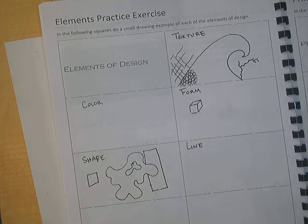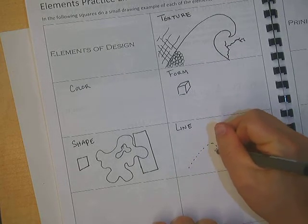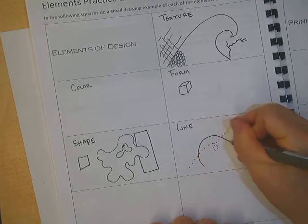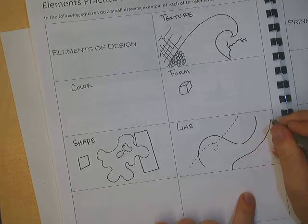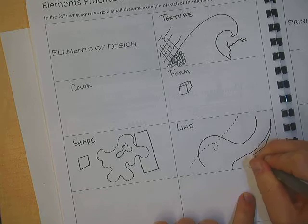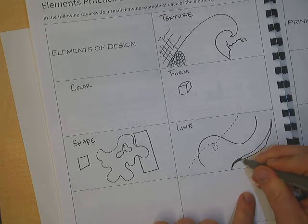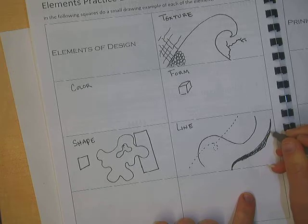There's also line. So remember, way back at the beginning of the trimester, we talked about line variety. So you can have dashed lines. You can have curvy lines or straight lines. You can have thick lines, thin lines, jagged lines, etc. So how can I create a little art piece that shows line?